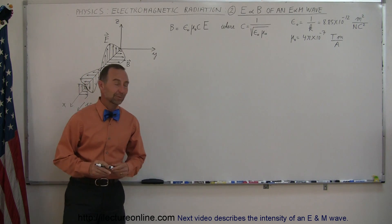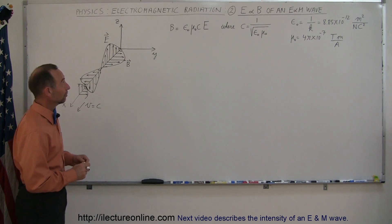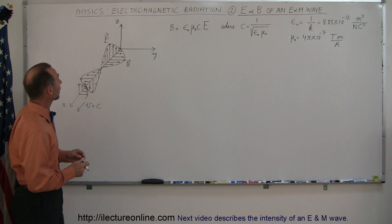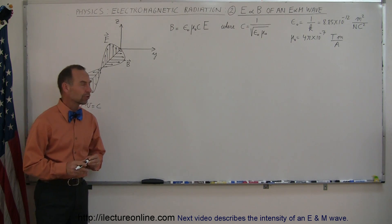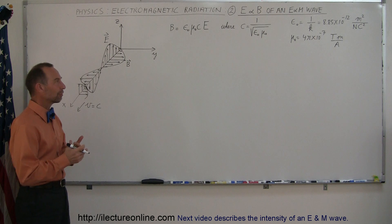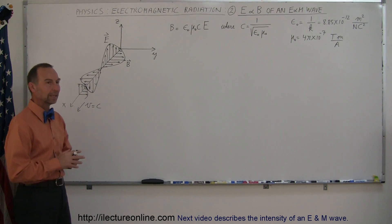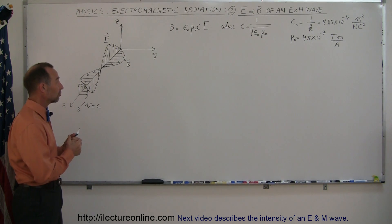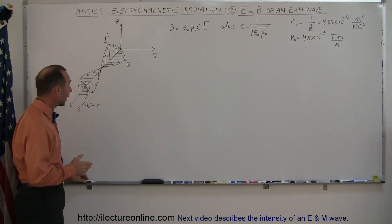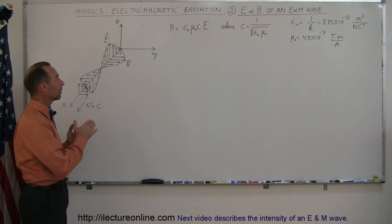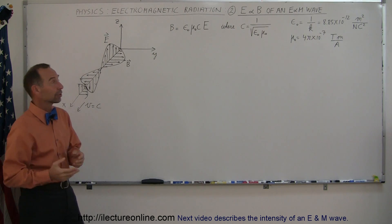This is lecture two on electromagnetic radiation and physics. We're going to talk about the actual wave and get a little bit more of a feel of what that really is. When light or any form of electromagnetic radiation is traveling through space, there are two components: the electric field component and the magnetic field component.